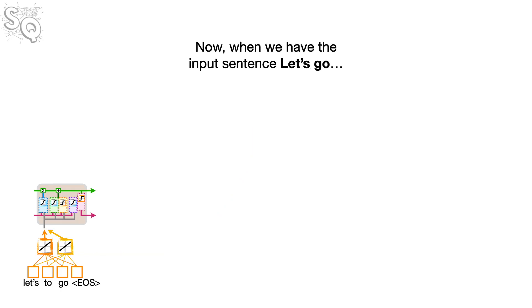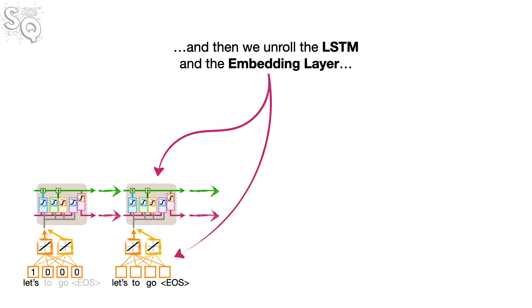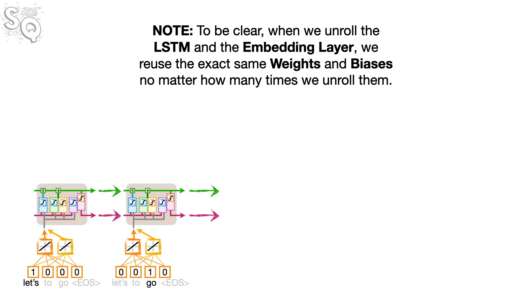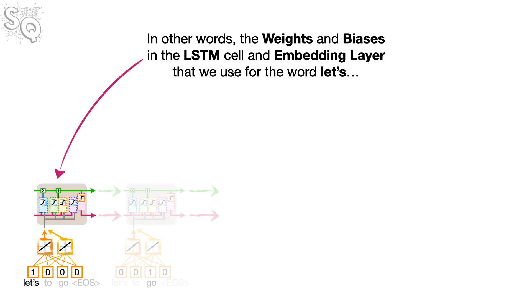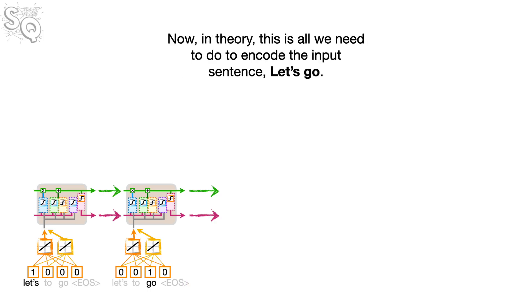Now, when we have the input sentence 'lets go,' we put a 1 in the input for 'lets' and a 0 for everything else. Then we unroll the LSTM and the embedding layer, and put a 1 in the input for 'go' and a 0 for everything else. To be clear, when we unroll the LSTM and the embedding layer, we reuse the exact same weights and biases no matter how many times we unroll them. In other words, the weights and biases used for the word 'lets' are the exact same ones used for the word 'go.' In theory, this is all we need to do to encode the input sentence 'lets go.'